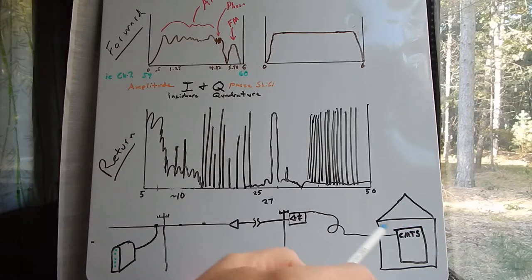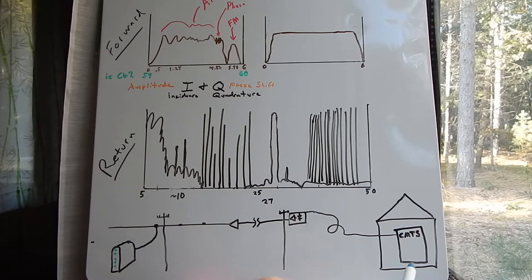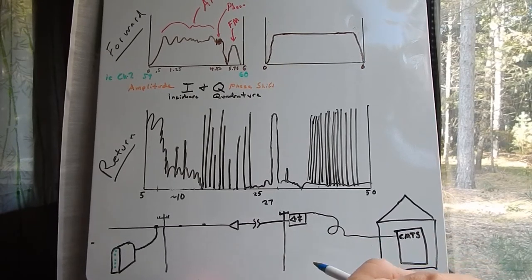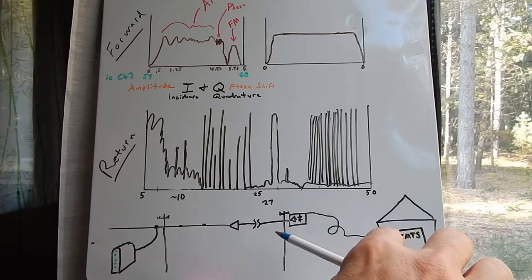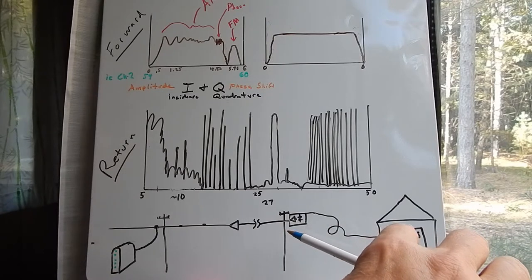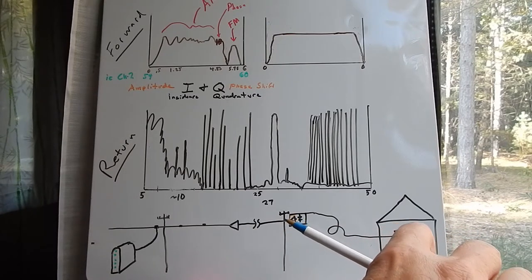We've got broadcast, narrowcast, and then we've got return. And of course we've got power, that's a whole other ball of wax. Anyway, the office is sending us forward signal that's broadcast, which means everybody sees it in the whole system.